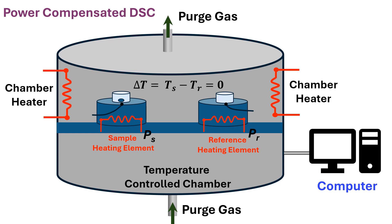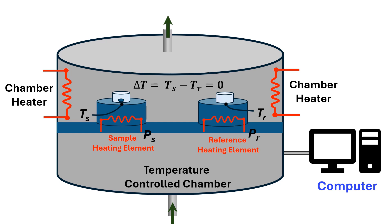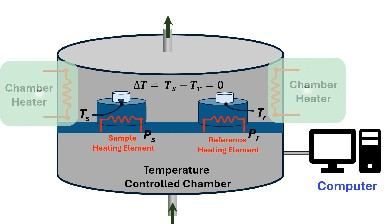Finally, heat flow is plotted as a function of temperature or time while heating at a constant rate. Therefore, in this system we measure sample temperature, reference temperature, and power supply to the sample and reference. For heating, electrical heating is used, and during cooling a refrigeration system or liquid nitrogen is used. Liquid nitrogen systems can cool the process much lower than the mechanical cooling system.